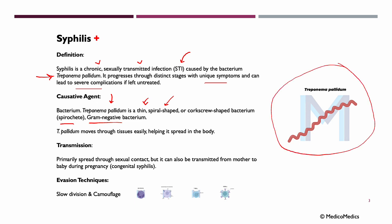You can see it illustrated right here. It primarily spreads through sexual contact, but can also be transmitted from mother to baby during pregnancy — we call that congenital syphilis. Something else worth mentioning is evasion techniques. Treponema pallidum divides slowly, which delays an immune response. Furthermore, the bacterium lacks certain proteins on its surface, making it harder for immune cells to recognize and attack it.